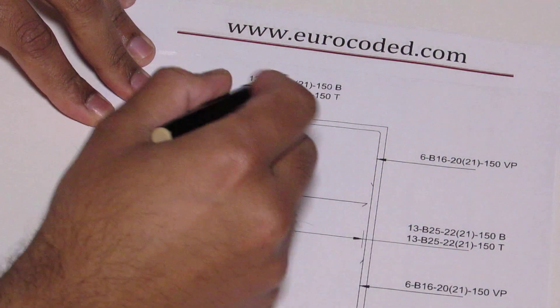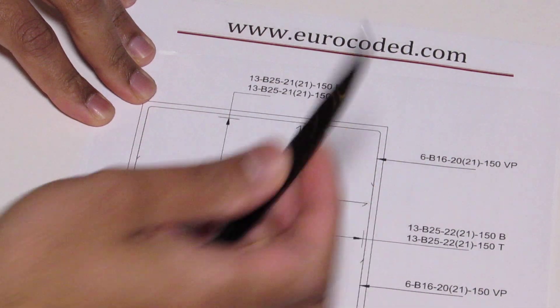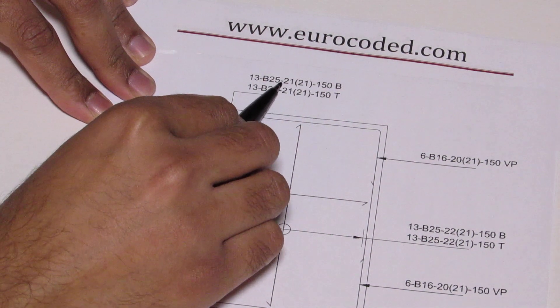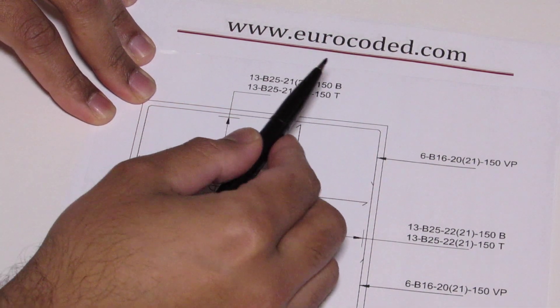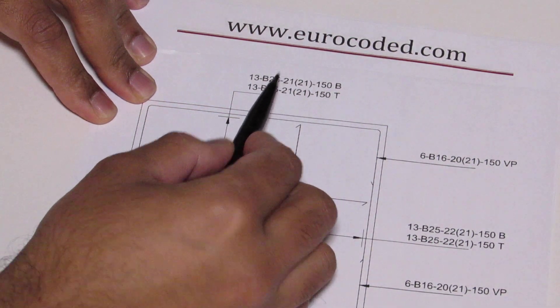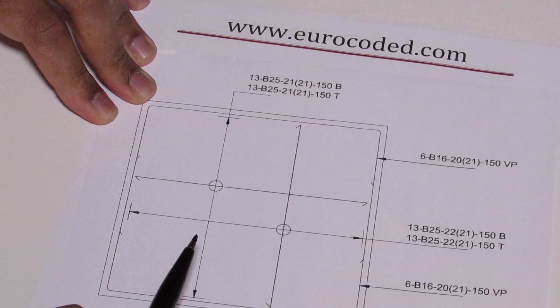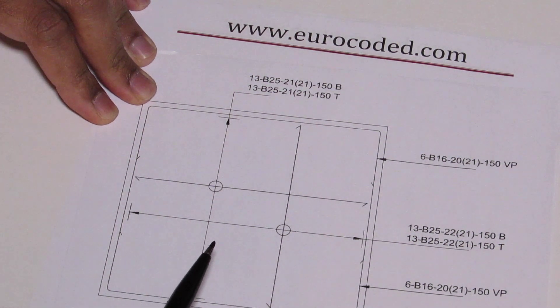If I begin with this number here which says in this case 21, that is basically the bar mark. That's what you need to look in bar bending schedule to find out what it is.